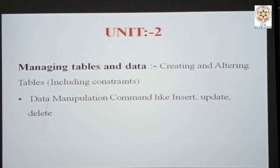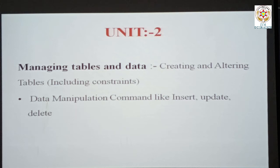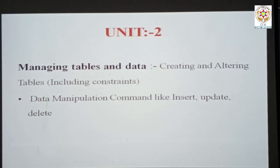We manage data with the help of creating and altering tables. Creating means creating the physical structure, and ALTER is basically a query which modifies the physical structure of a table — meaning you are defining rows and columns, specifying how many columns you can have. Constraints include keys like primary key, secondary key, and foreign key. We use keys to reduce redundancy, meaning repetition — for example, if the name 'Ashish' appears in row one, row two, and row three, that is repetition. With constraints, we can reduce that repetition.